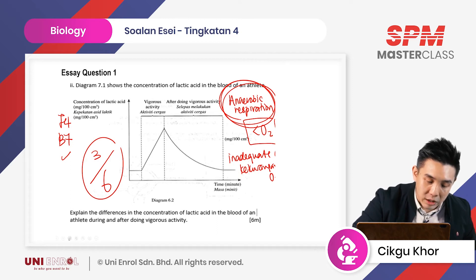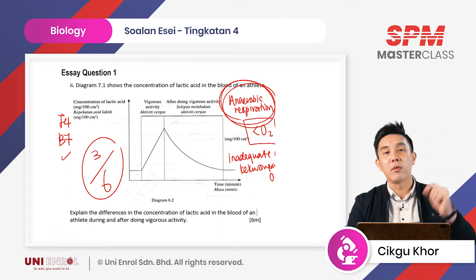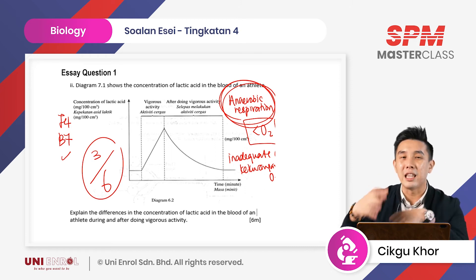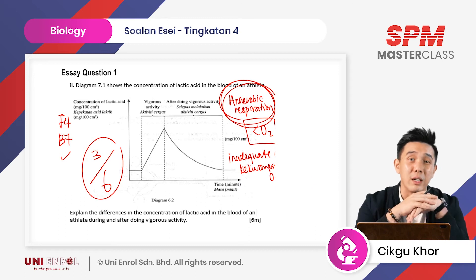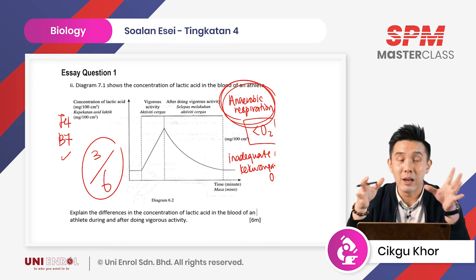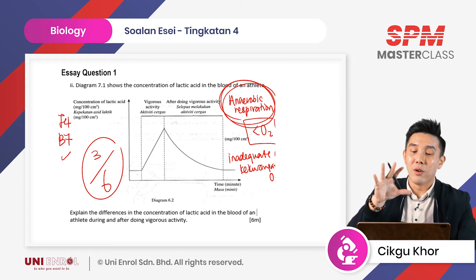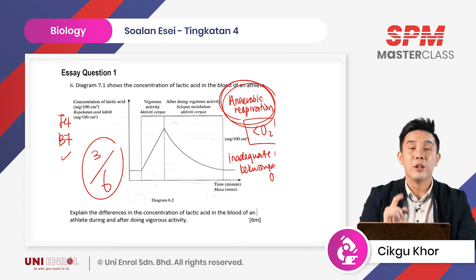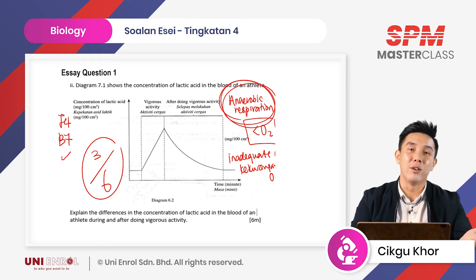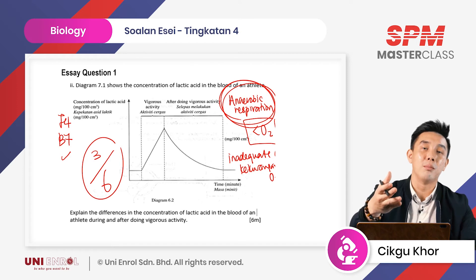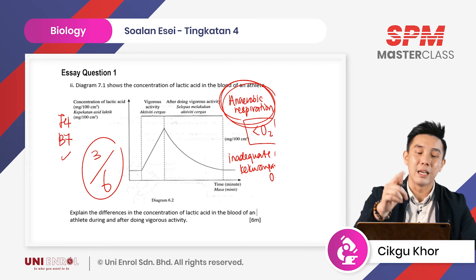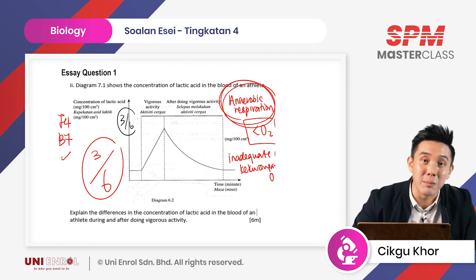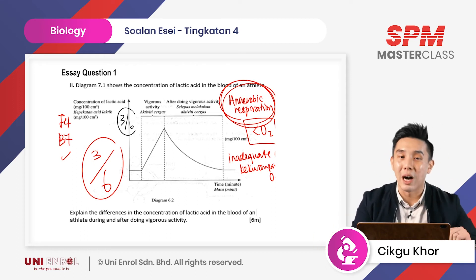In SPM nowadays, the trend is such that if you just copy from the book, you cannot get full marks. There will be many tips I'll be sharing during the SPM Masterclass. But for now, for this particular question, if your essay includes a graph, you'll be surprised that without referring to any book — kosong buku — even if you don't understand at all, you can still get three marks. Let me show you how it's done.